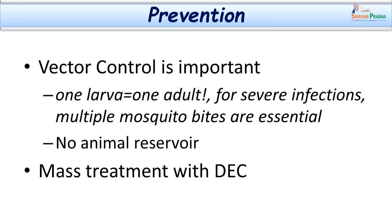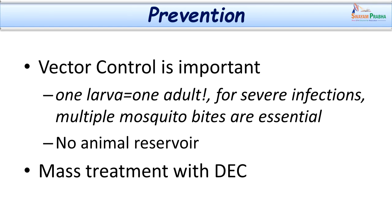For prevention, this is a vector-borne disease, so vector control is a very important step. One larva entering the human being through a mosquito bite converts into only one adult worm, because larvae do not multiply inside the human beings. Severe infections are possible only through the bites of multiple mosquitoes — there is no multiplication of larvae inside the human body. Since there is no animal reservoir, vector control is especially important. Mass treatment with diethylcarbamazine in communities is another important preventive measure.